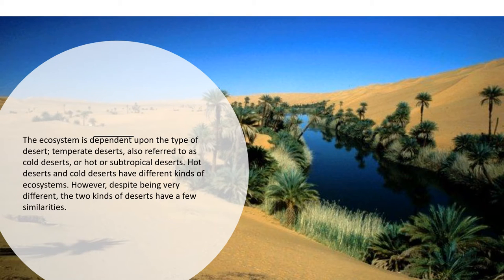When we talk about adaptations in plants and animal life, the ecosystem is also influenced by the changes in the flora and fauna of the system. The ecosystem is dependent upon the type of desert — whether it lies in the coastal desert, a very cold desert like Antarctica, or a hot desert like the Sahara. Temperate deserts are also referred to as cold deserts, while hot or subtropical deserts are another category. Hot deserts and cold deserts have different kinds of ecosystems.